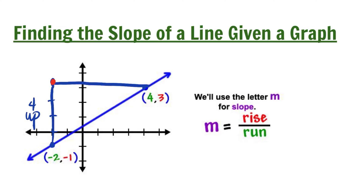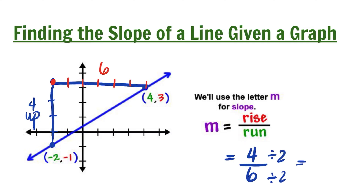We are moving how many units to the right? That's 6 units to the right. So the slope of this line is 4 units up and 6 units to the right, which gives us 4 over 6. We can simplify this fraction by dividing both numerator and denominator by 2, giving us a slope of 2 thirds.